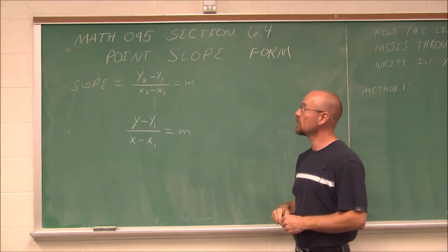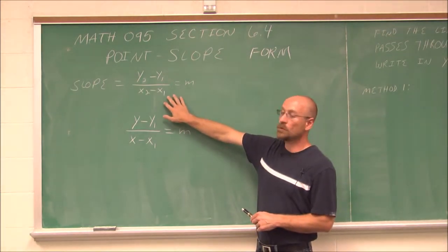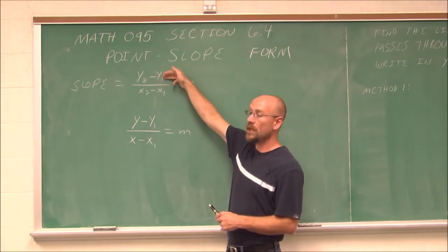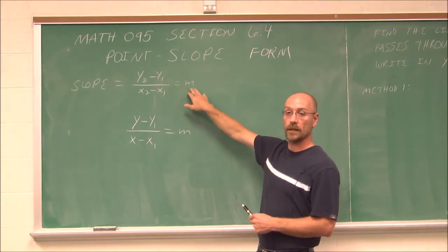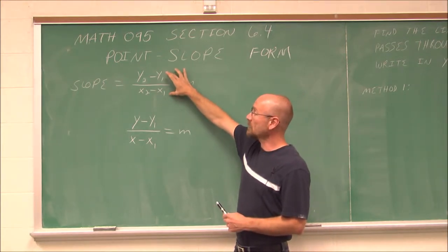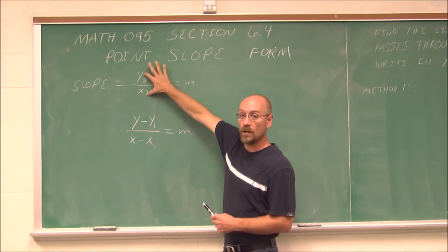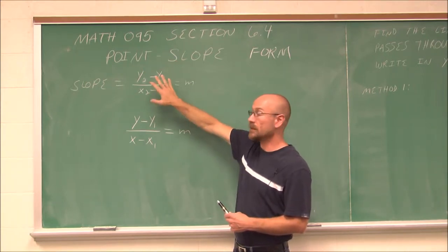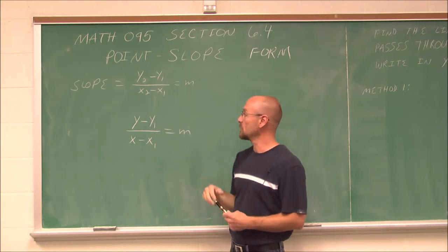Before we actually see what point-slope form is, we're going to review slope. Slope is defined as the change in y over the change in x, which we denote with the letter m. In order to find slope, we need two points — an x,y of one point and an x,y of another point, and we'll denote which one's point 2 and which one's point 1.